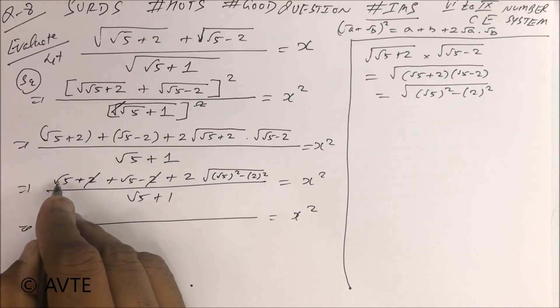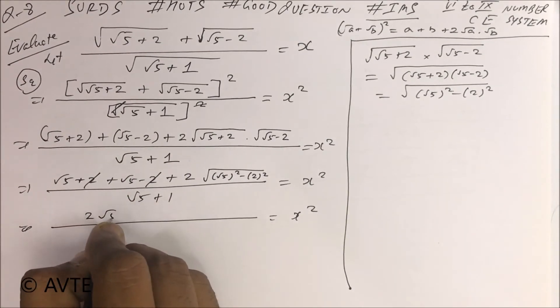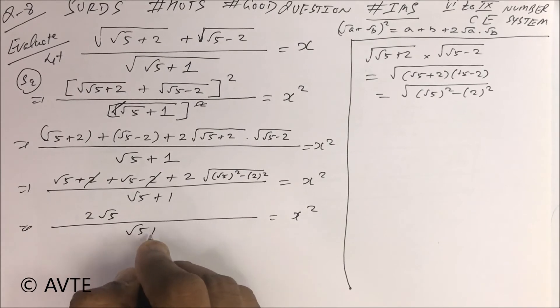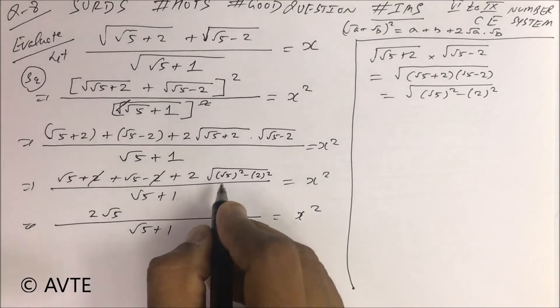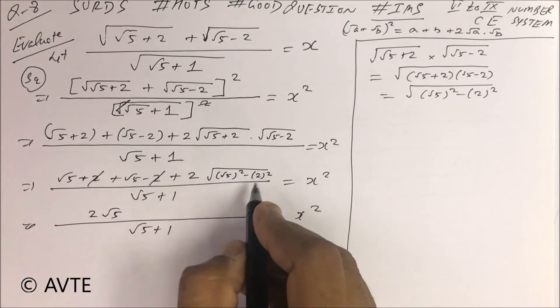See, this 2 will be cancelled. √5 + √5 = 2√5. In the denominator √5 + 1, so check it out: (√5)² is 5 and 2² is 4, 5 - 4 = 1.